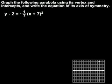Here, we're asked to graph the parabola y minus 2 equals negative one-seventh times parentheses x plus 7 squared, using its vertex and intercepts, and write the equation of its axis of symmetry.